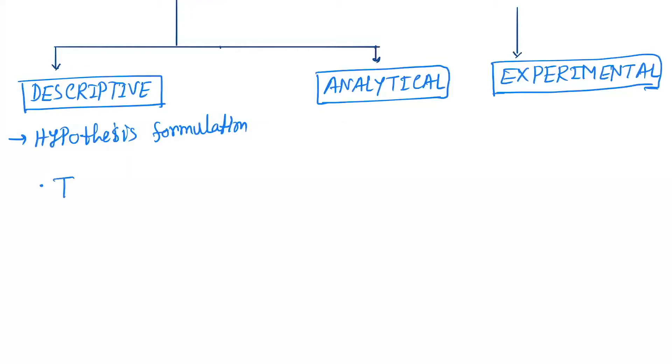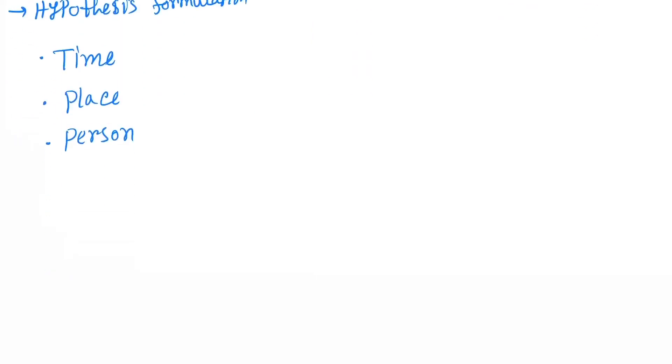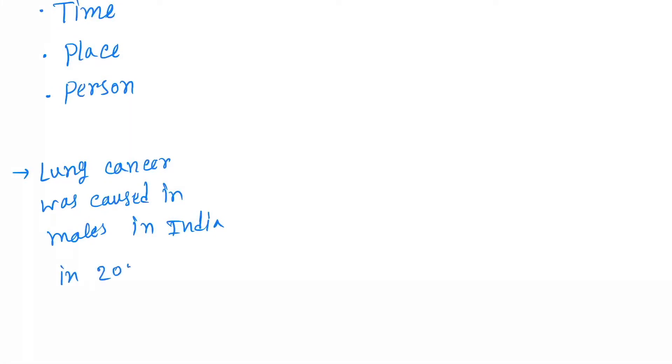So we see the time, next is place, and person. Let's understand by an example. So suppose lung cancer was caused in males in India in 2020. So here males is a person, India is a place, and 2020 is time: time, place, and person.